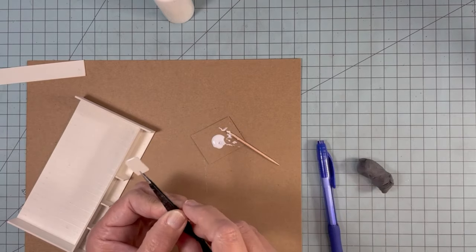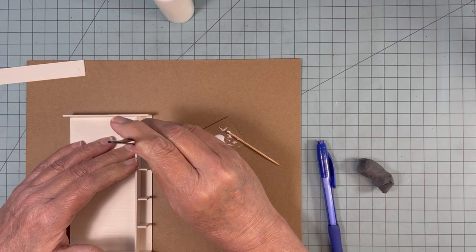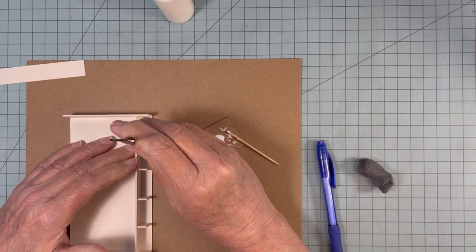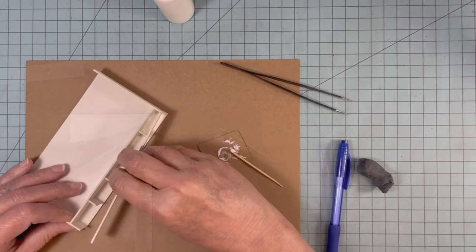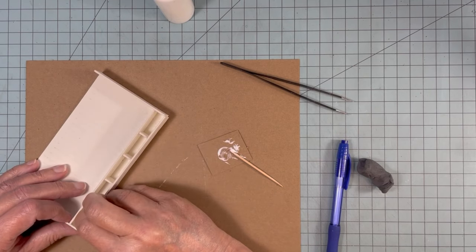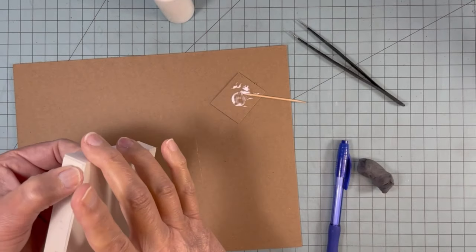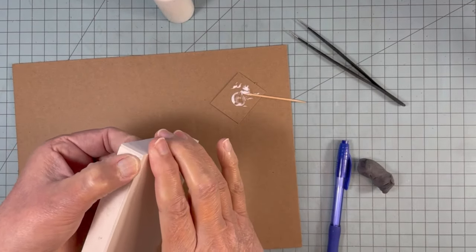Here I'm gluing in the dividers between the drawer sections. And now the bottom piece. Here I'm making sure that the bottom is flush with the sides and the back.